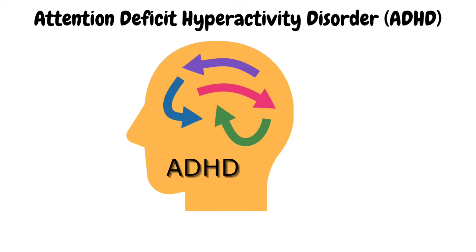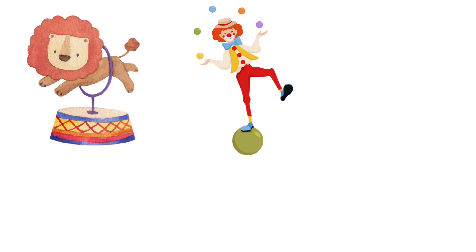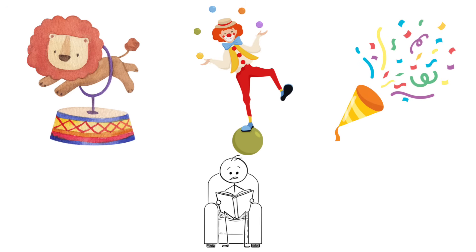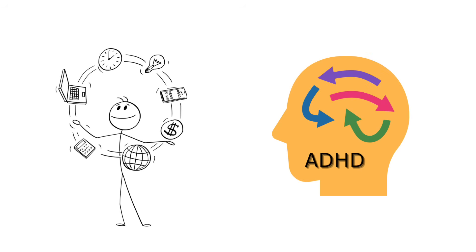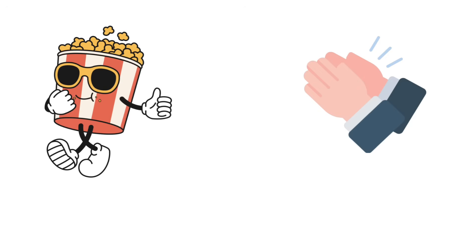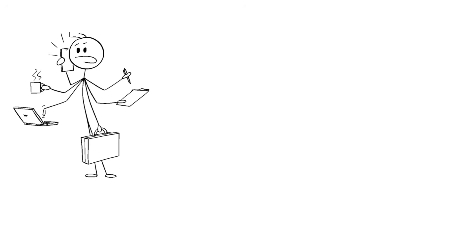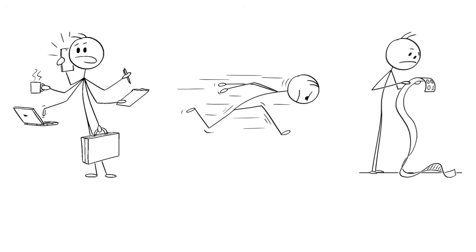Attention Deficit Hyperactivity Disorder, ADHD. Imagine walking into a circus where lions are leaping, clowns are flipping, and confetti is flying through the air, and you're supposed to sit quietly and read a book. That's kind of what it's like to live with ADHD. Your brain becomes the ultimate three-ring circus, but instead of popcorn and applause, it's a whirlwind of distractions, energy bursts, and forgotten to-do lists.